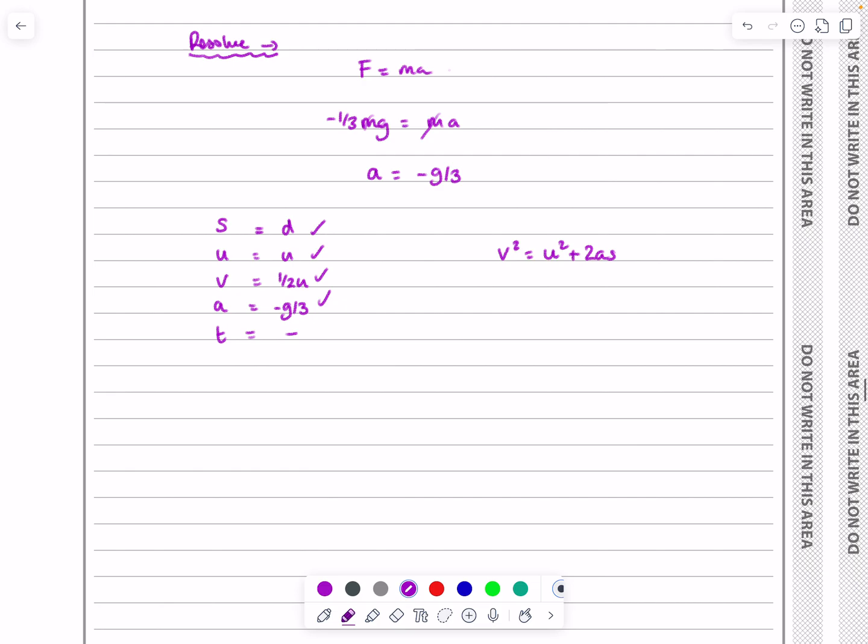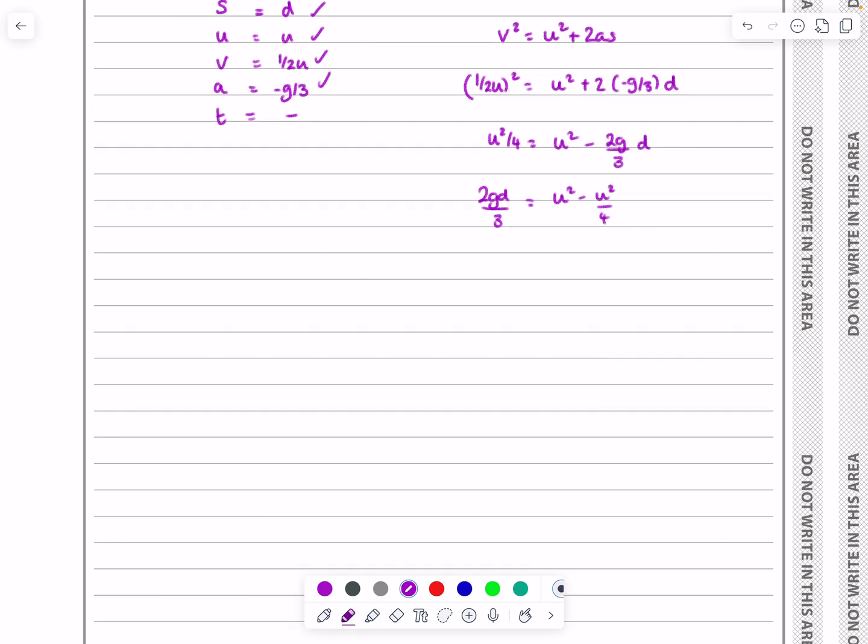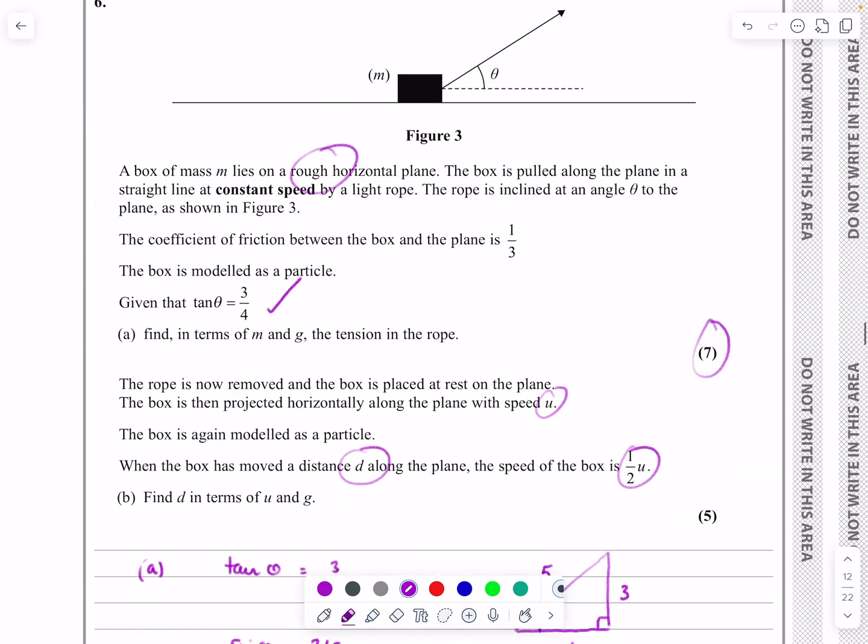Just need to put everything into this. Be careful. Half u squared is u squared plus 2 lots of minus g over 3 times d. Let's tidy that up. u squared over 4 is u squared minus 2g over 3d. Rearranging, 2gd over 3 equals u squared minus u squared over 4, so that's three-quarters u squared. Tidying it all up, this is 9u squared over 8g as our representation for d.